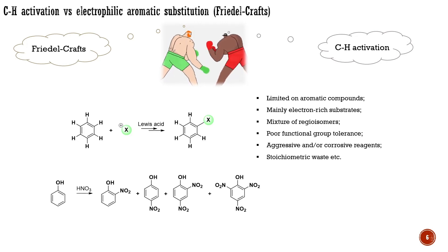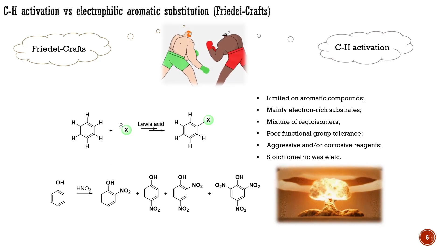For instance, let's consider nitration. It works effectively only for electron-rich systems like phenols, and stopping the reaction after introducing one nitro group is challenging. Attempting to do so will likely result in a mixture of regioisomers, and in addition, it may lead to a significant explosion.